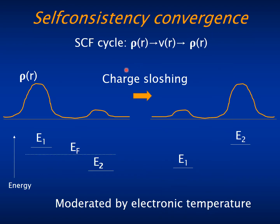Let us finish with something which is frequently the nightmare of the DFT practitioner, which is the self-consistency convergence. We have to perform a self-consistency cycle in which you start with some density, calculate a potential, and from that potential solve Schrödinger's equation and calculate a new density.